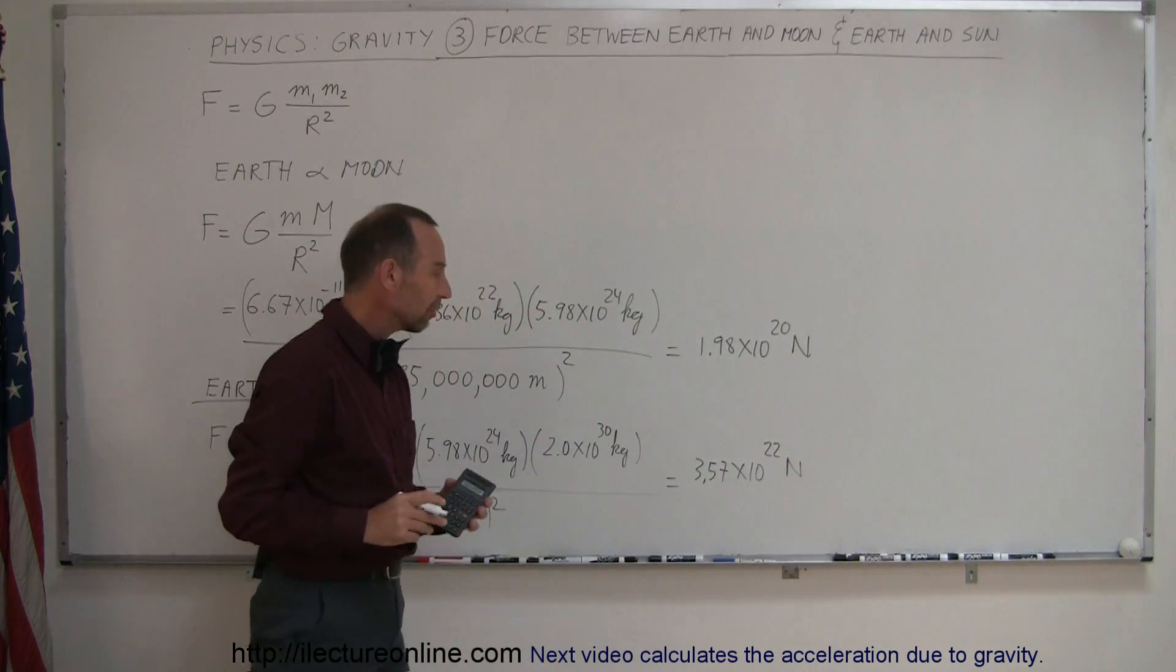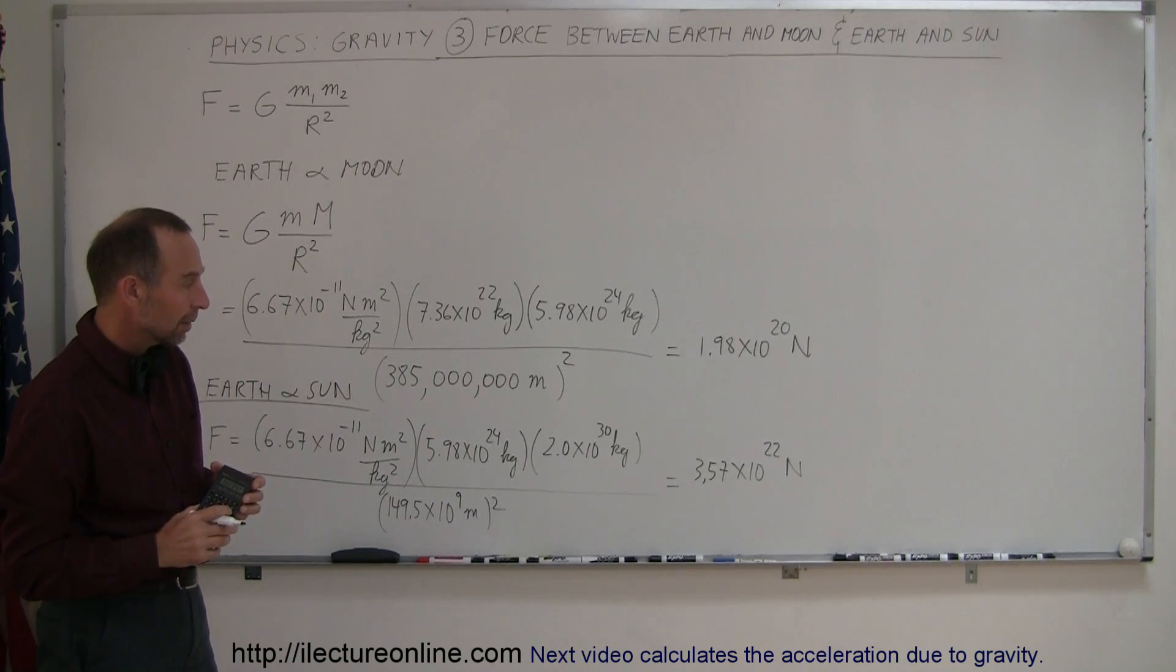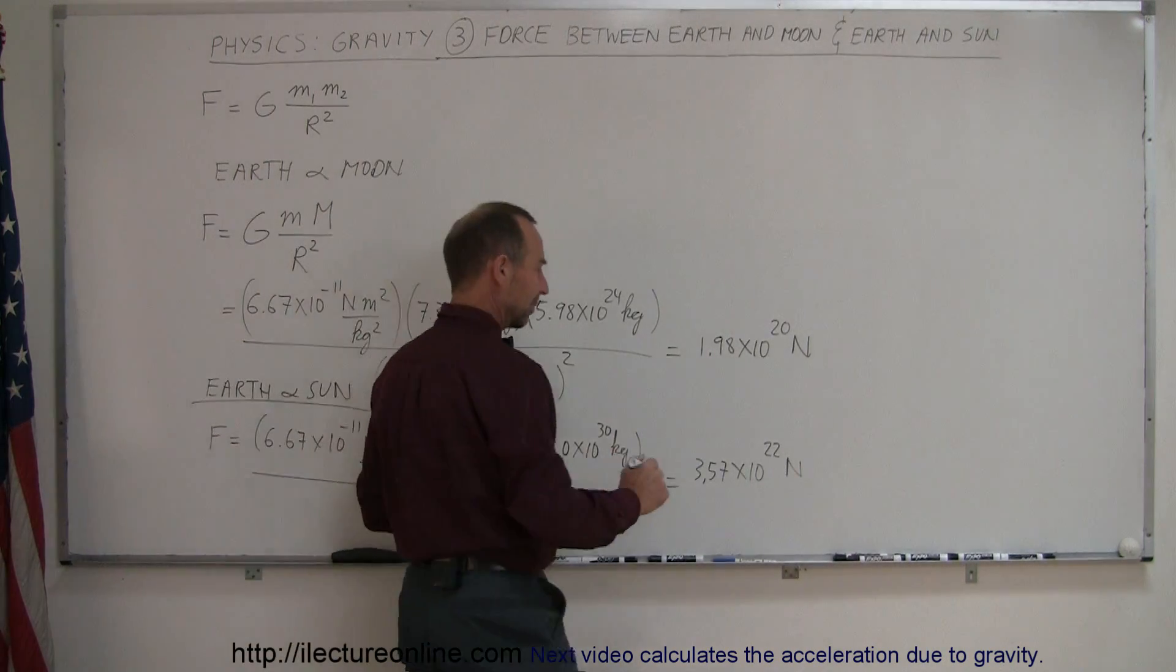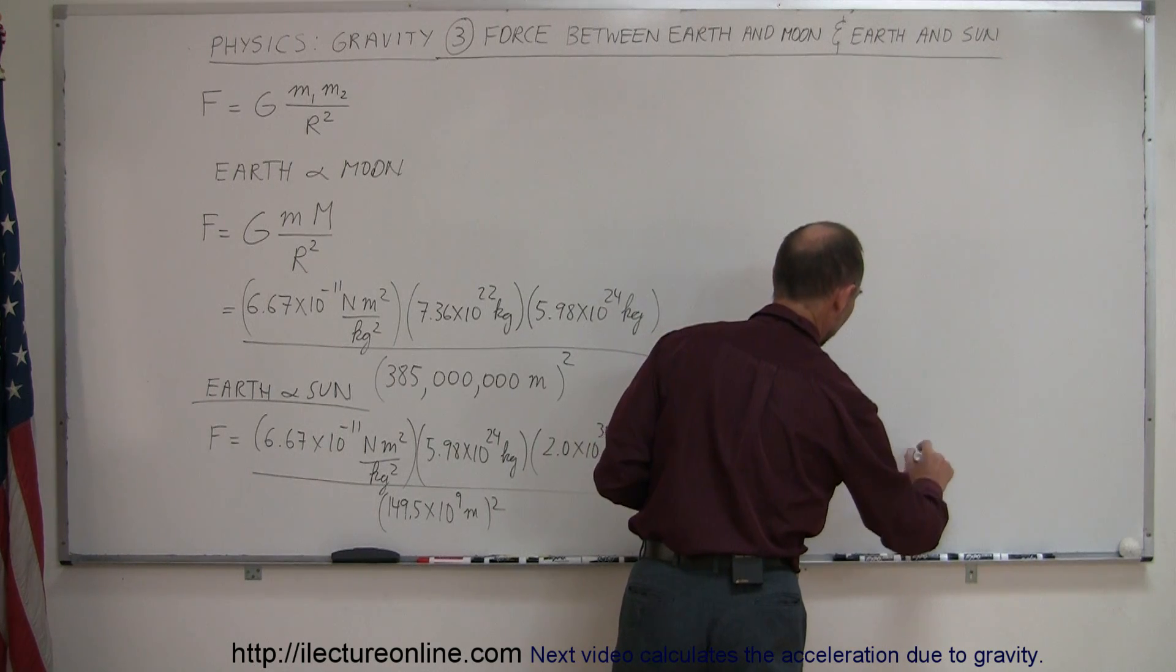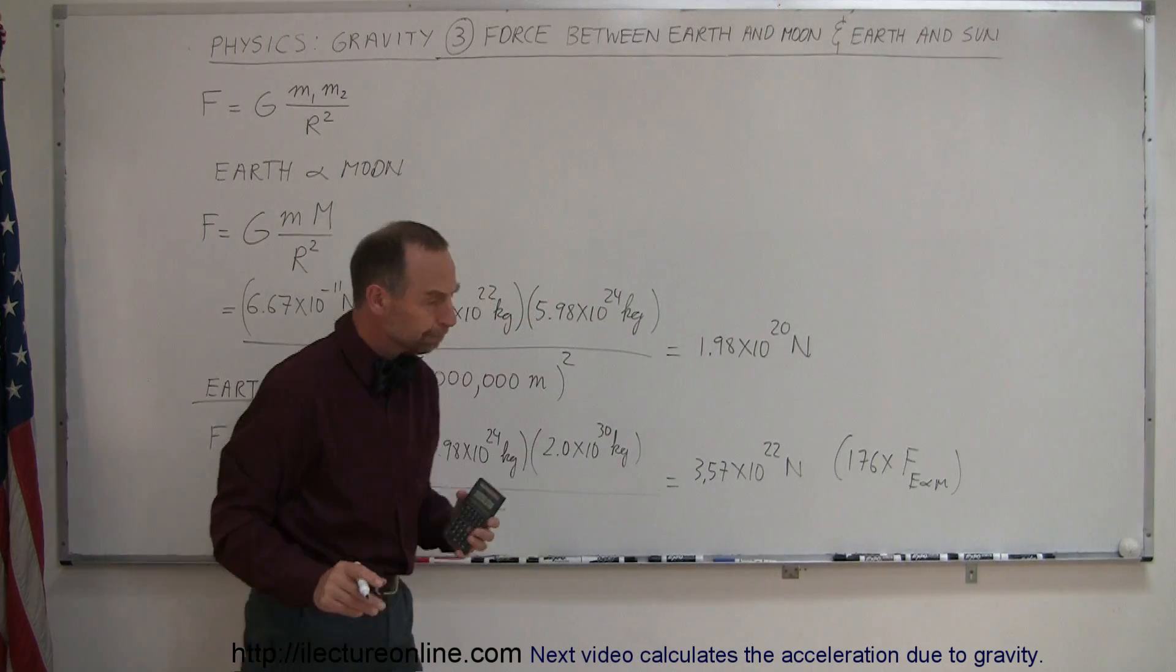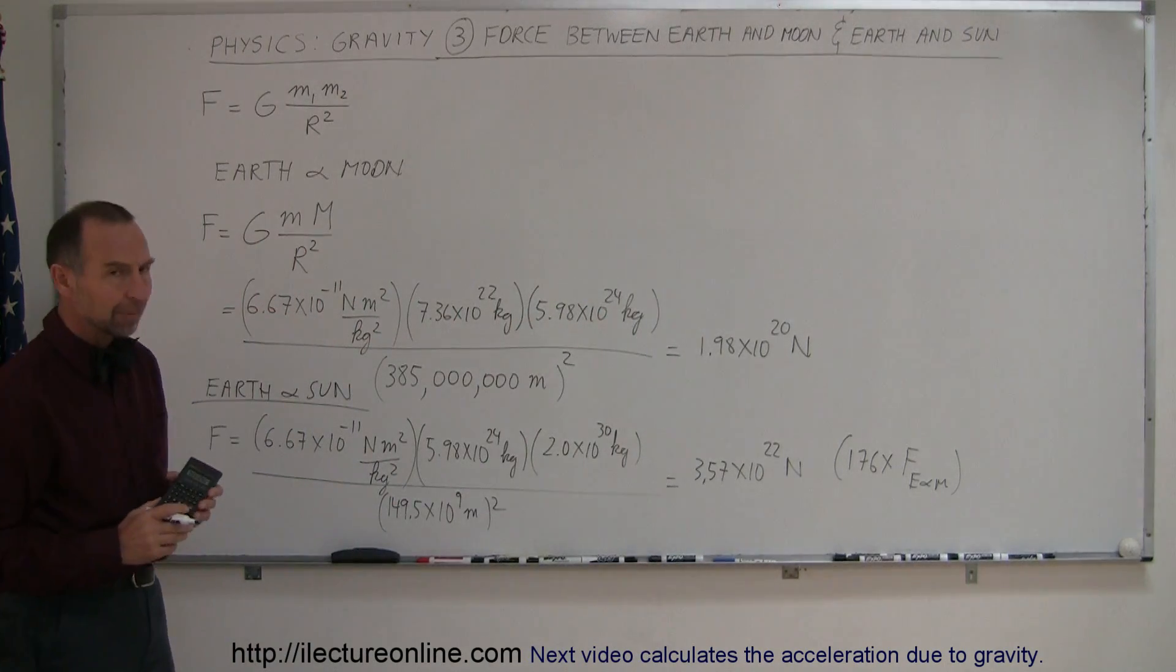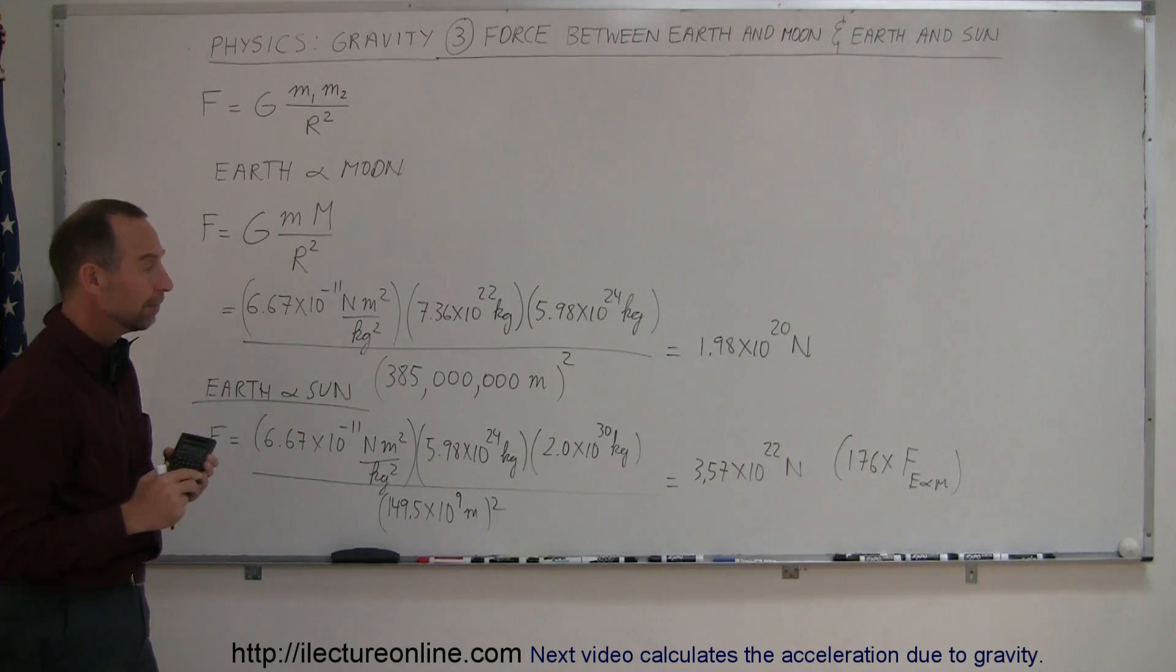Now look at that. That's roughly, I think it's like 176 times. So this is 176 times the force between the Earth and the Moon. It takes a lot more force, because the Sun is so much bigger than the Moon, to keep the Earth in orbit around the Sun.